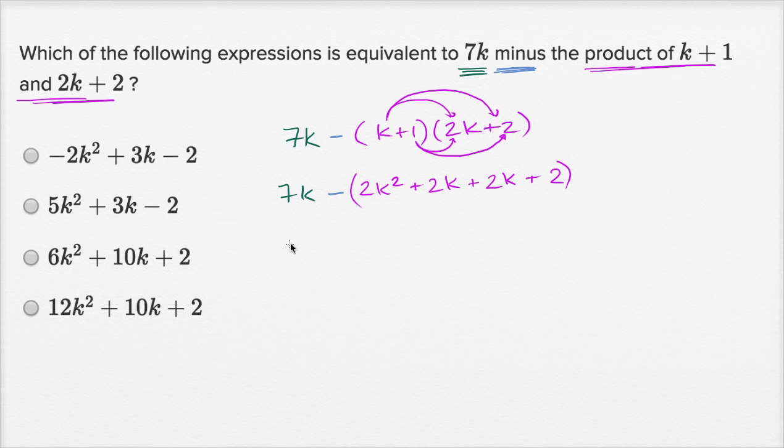So this is going to be the same thing as 7k minus, and then in parentheses we have 2k squared. We can add 2k plus 2k to get 4k plus 2.